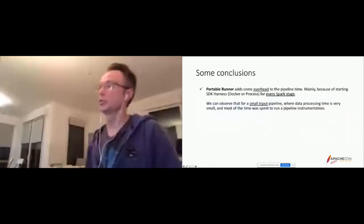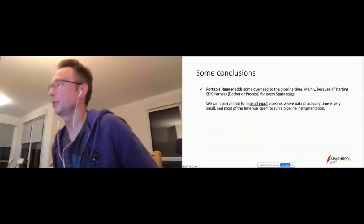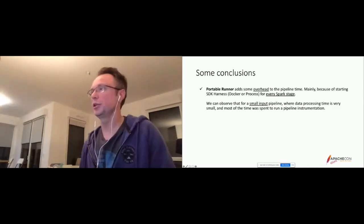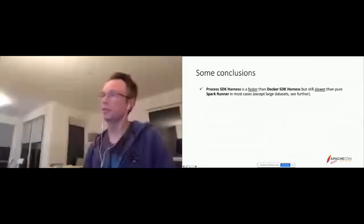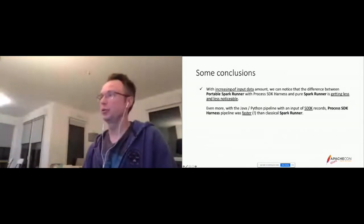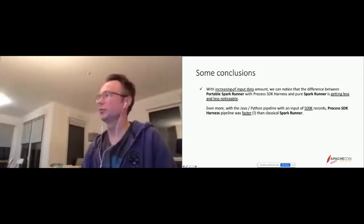Some conclusions: the portable runner does add some overhead to pipeline execution time, mainly because of time spent starting the SDK harness. For small data this is quite noticeable. Process SDK harness is faster than Docker SDK harness, but still slower than pure Spark runner in most cases. As input data size increases, this difference becomes less and less noticeable, so for real-life input data it should not be a problem.